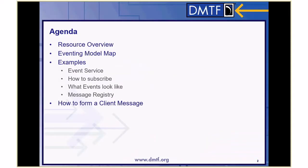A quick agenda: I'm going to go over the resources that are involved in events, what the eventing model map looks like, some examples, and then how our client actually forms a message from all of these objects.